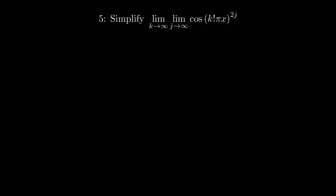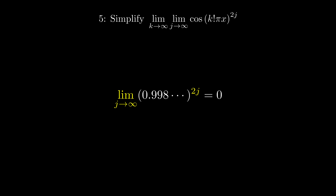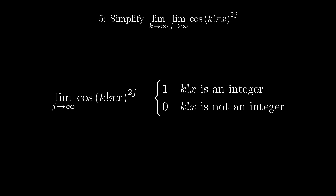So let's solve the fifth one first. The inner limit is cosine of k factorial times x, to the power of 2j, when j goes to infinity. Because cosine is no greater than one, when it is one we get one, but as long as it is smaller than one — no matter how small the difference is — we get zero.